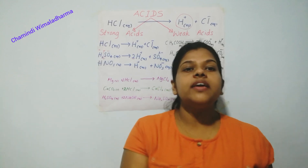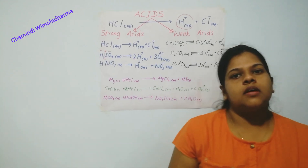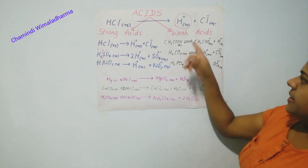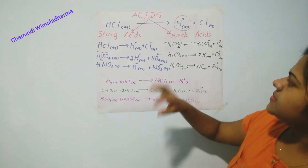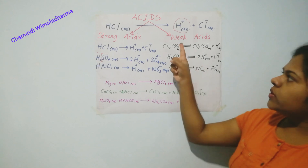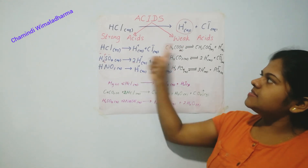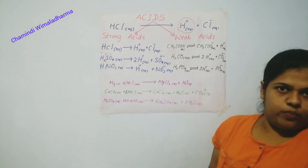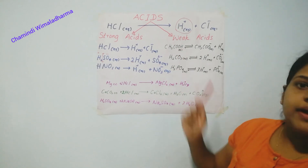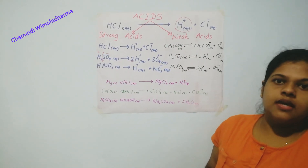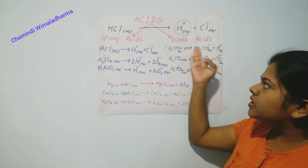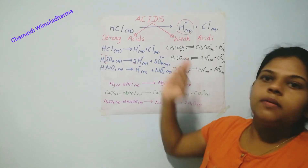Now we will move to the weak acids. What is the difference between a strong acid and a weak acid? You can see there is a difference in the arrow. Normally in weak acids, we have to use double arrows — that means reverse arrows. This reaction can either happen in the forward or the backward direction.